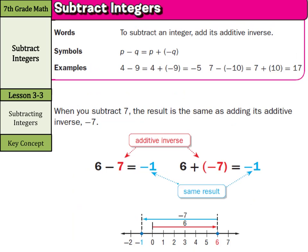Here's our rule for subtracting integers: to subtract an integer, add its additive inverse. For example, four minus nine equals four plus negative nine, which equals negative five. And seven minus negative ten equals seven plus positive ten, which equals 17.